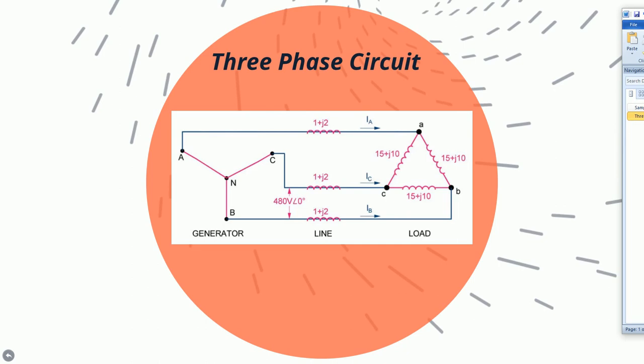For this problem, in this figure, the line voltage of 480 volts is shown for the Y generator on the left-hand side. The per-phase transmission line impedances are also shown here. Finally, the delta load with per-phase impedances are shown.